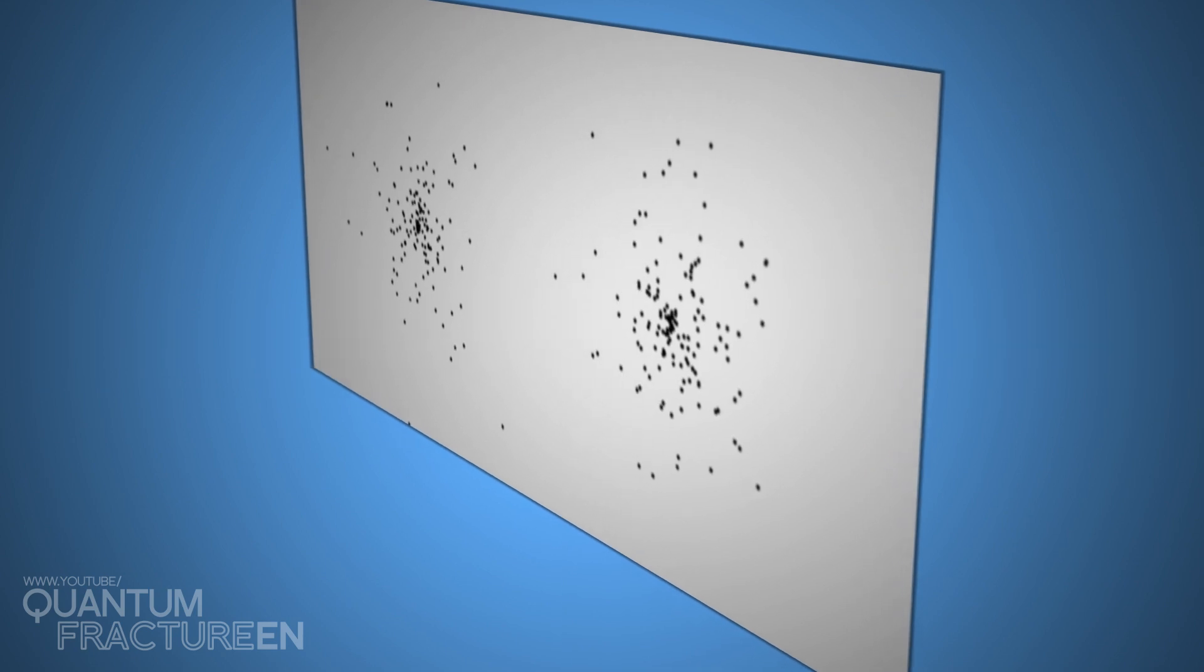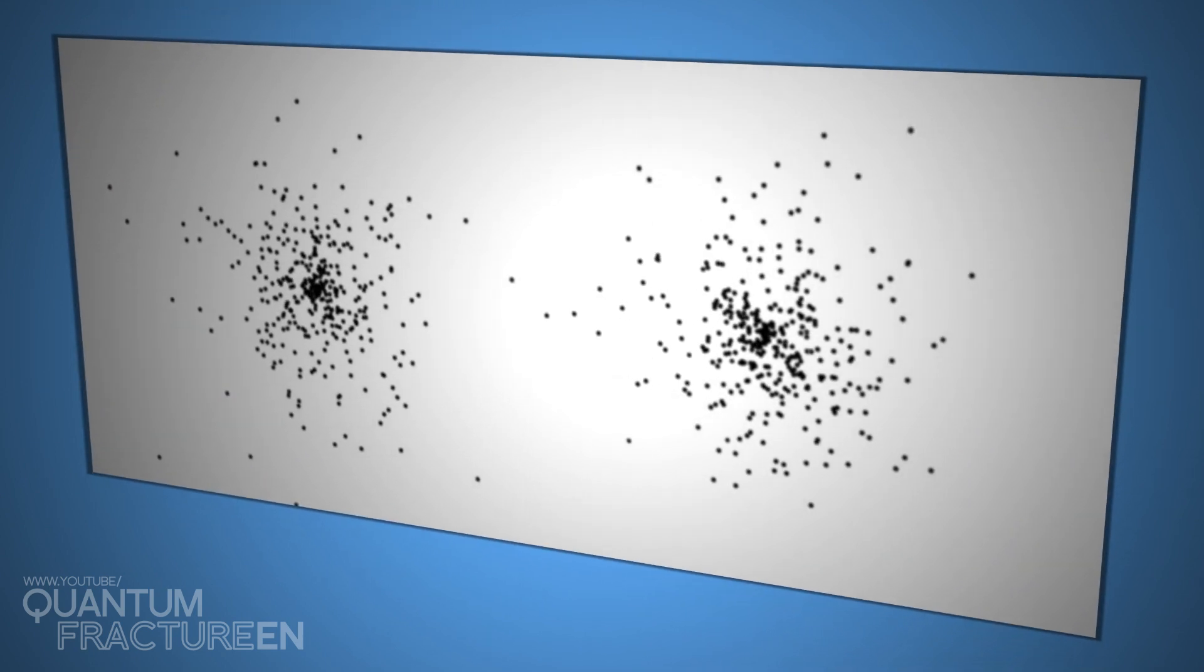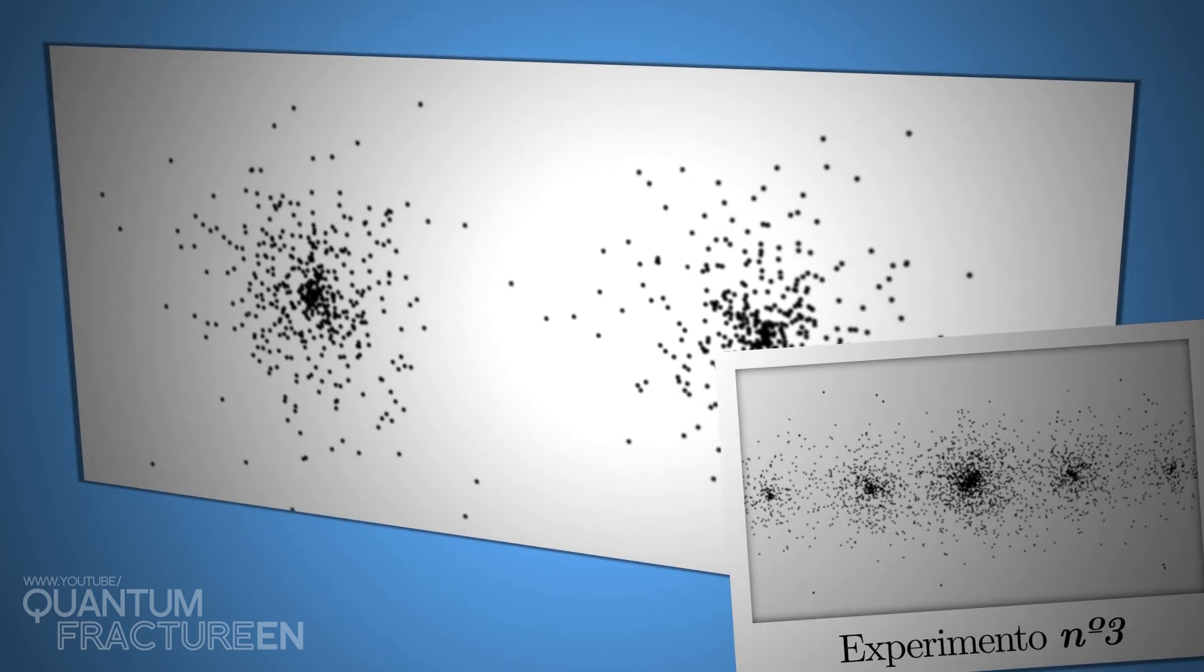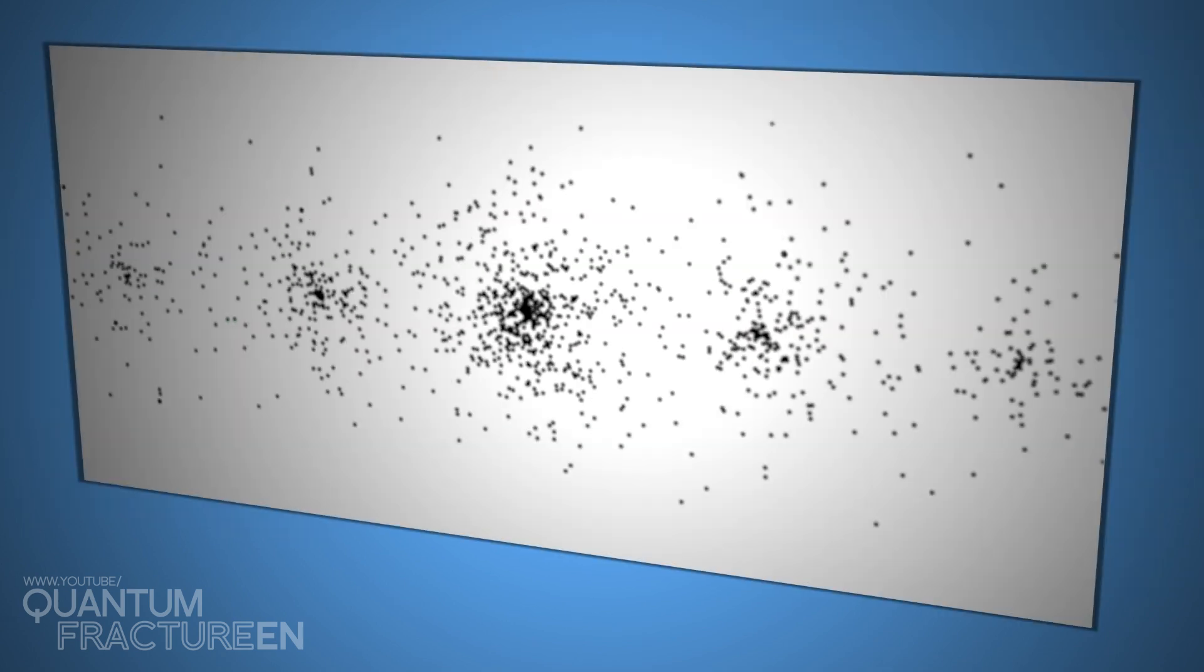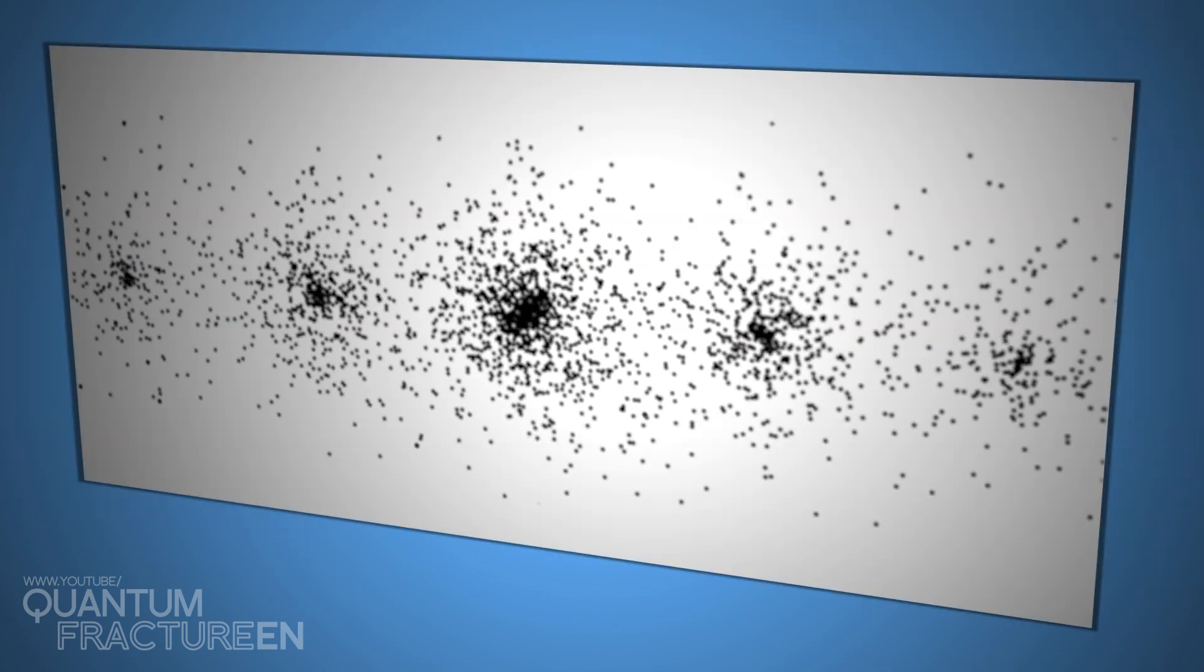But just when we think the world makes sense again, we look at the screen and boom. The pattern from before isn't there. We take away the detectors, repeat the experiment, and the pattern from experiment three reappears. We put them back, repeat the experiment, and get the pattern from experiment two.